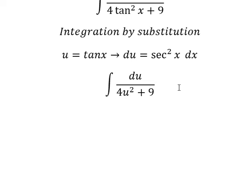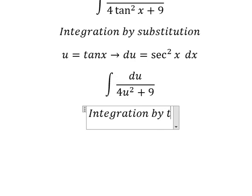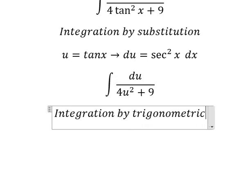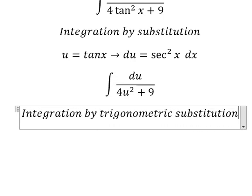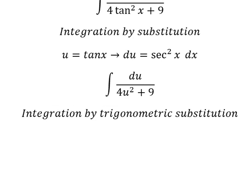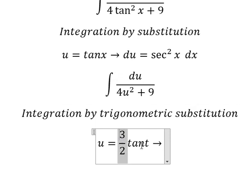The next one we can use integration by trigonometric substitution. So I will put u equals three over two tan t, because if I put this one here we have nine over four tan x square.